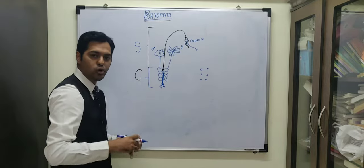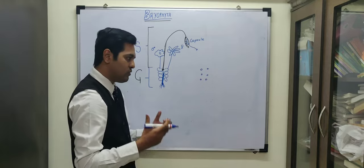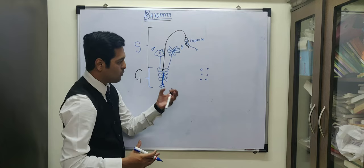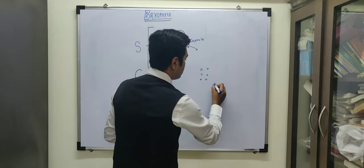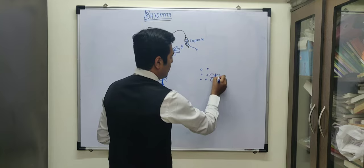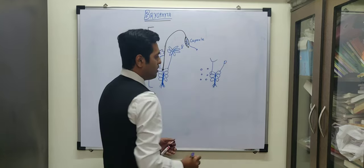The spores germinate depending on whether it is direct or indirect germination. We discussed direct and indirect germination in my previous video. Once germination starts, it produces the gametophytic generation with root-like, stem-like, leaf-like structure, and formation of male sex organ, female sex organ,